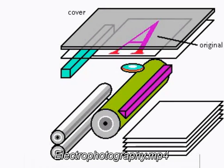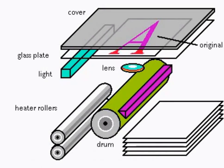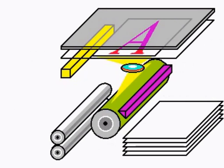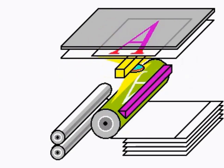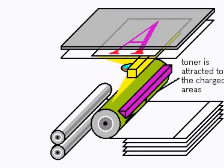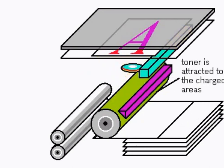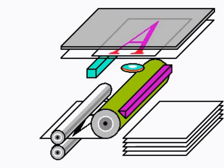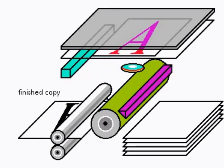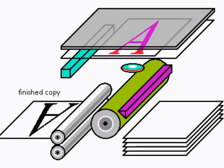Xerography is based on the principle that a certain material can retain an electrostatic imprint of a brightly lit image. When a document is placed in a copier, a bright light is bounced off the paper, through a lens, and onto a specially coated drum. The coating becomes electrostatically charged with the mirror image of the document. As the drum rotates, fine black particles called toner are attracted to the charged areas on the drum. As copy paper is rolled over the drum, a heat roller fuses the toner onto the paper, reproducing the original image.